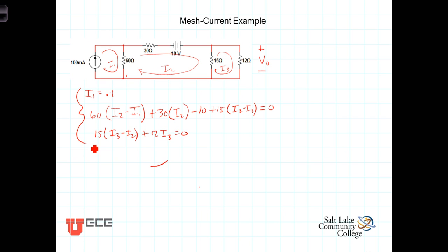So starting with the top equation, we have i1 equals 0.1. The second equation, factoring out i1, we've only got one i1 term with a negative in front of it with a 60, so it'll be minus 60. Plus i2, we have three i2 terms: we've got 60 plus 30 plus 15, which is 105.